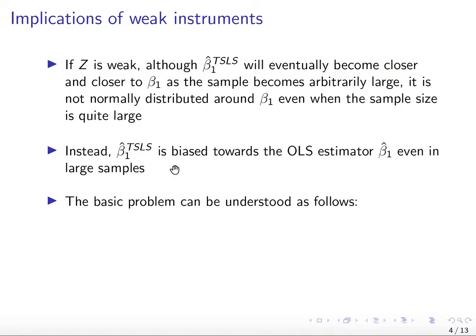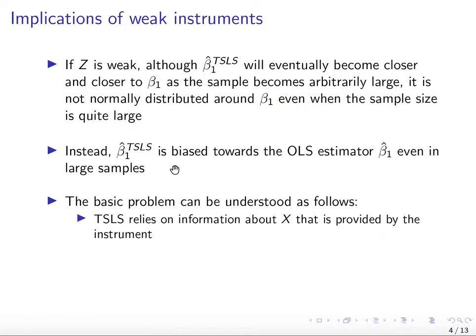In that case, beta two-stage least squares is going to be biased towards the OLS estimator even in large samples. The two-stage least squares really relies on information about x provided by the instrument. What the first stage gives you is how much you explain of the variation in x by the variation in your instrument. If your model is predicting a large variation in x, it means you're providing a lot of information about the variation in x.